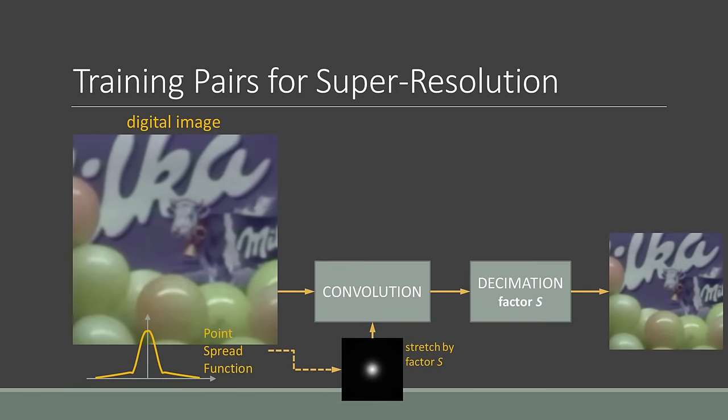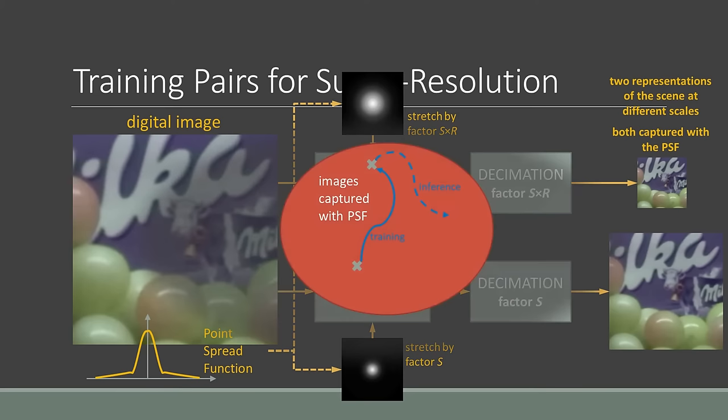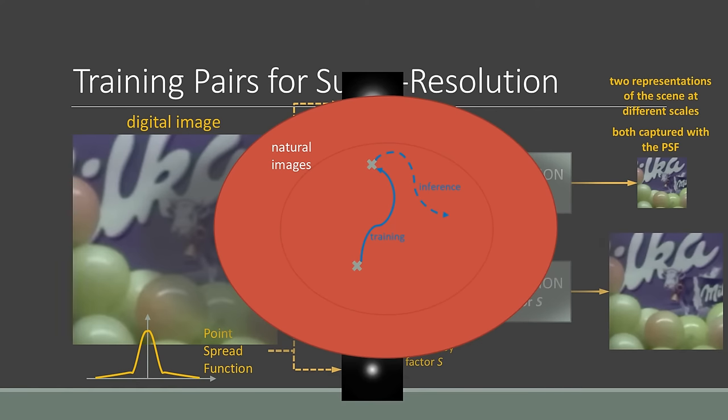To produce image pairs, we perform the capture simulation twice. Once with factor S and the second time with factor S times R. We get two representations of the scene at different scales with ratio R between them. Both images appear to have been captured by a camera with the same PSF. Now we can train the model to super-resolve images captured by the camera described by this PSF. By generating pairs with a variety of PSFs, we can train a model that will work on any natural image.